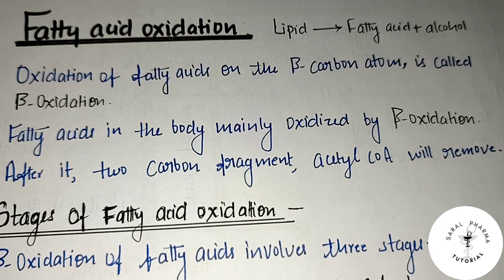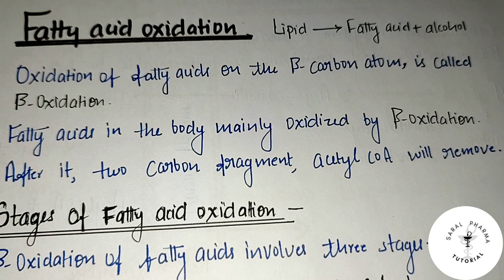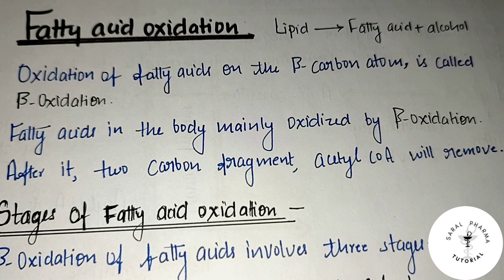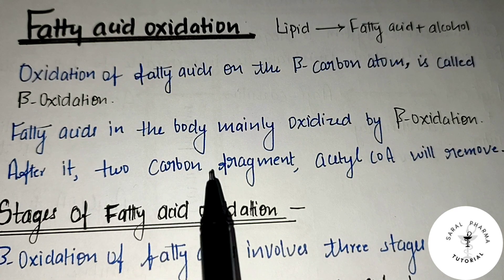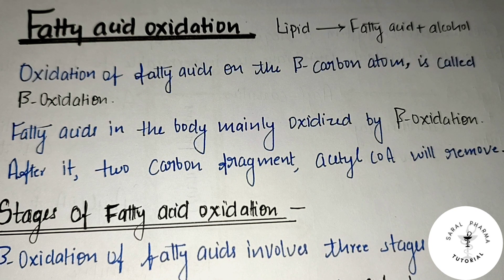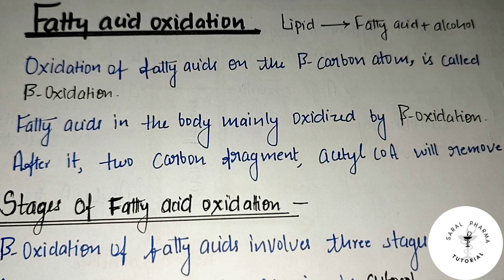What is oxidation? Oxidation of fatty acid on the beta carbon atom is called beta-oxidation. Fatty acid in the body is mainly oxidized by beta-oxidation. After beta-oxidation, two carbon fragments will be removed, and we get two acetyl coenzyme A units. Oxidation occurs at the beta carbon atom of the fatty acid.